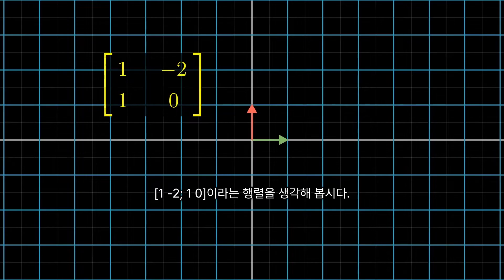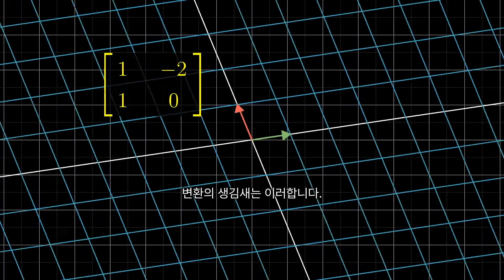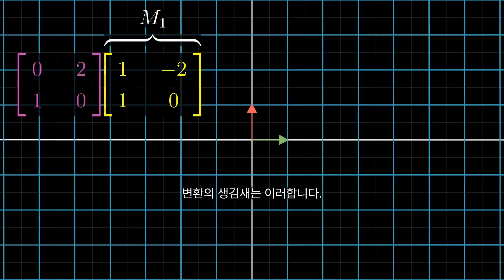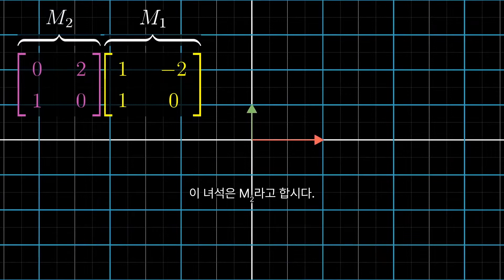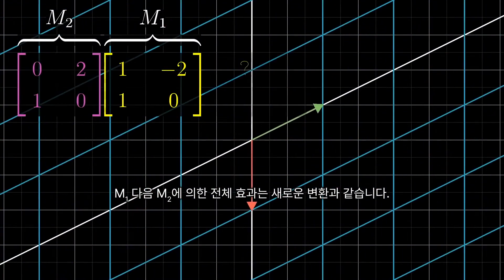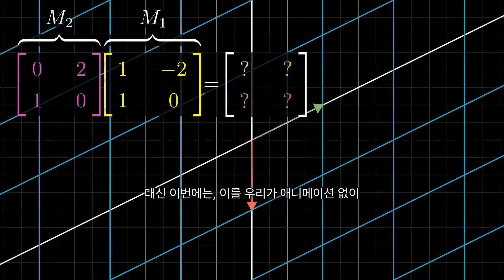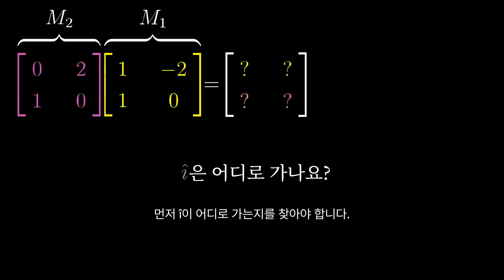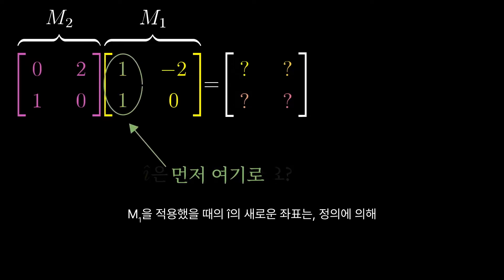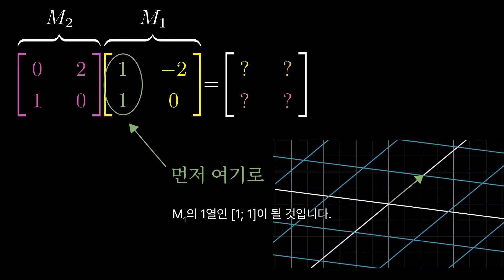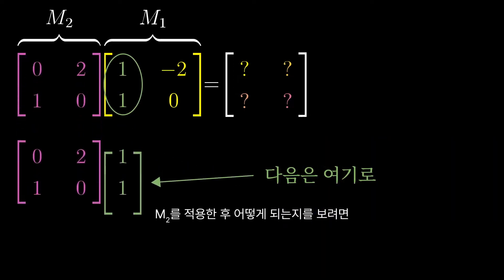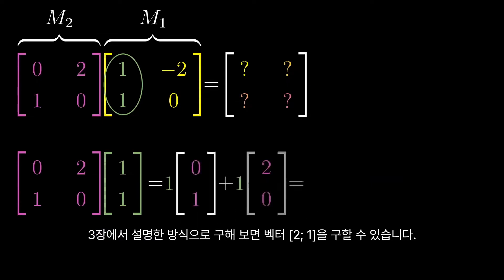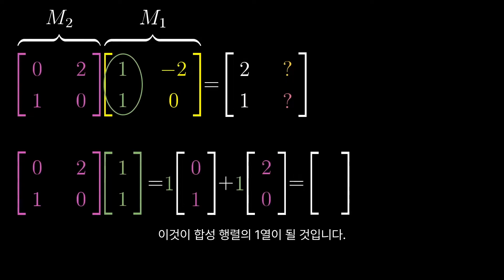Let's look at another example. Take the matrix with columns M1, whose transformation looks like this. Next, take the matrix with columns M2, whose transformation looks like this. The total effect of applying M1 then M2 gives us a new transformation, so let's find its matrix — but this time let's see if we can do it without watching the animations, using just the numerical entries in each matrix. First, we need to figure out where i-hat goes. After applying M1, the new coordinates of i-hat, by definition, are given by the first column of M1. To see what happens after applying M2, multiply the matrix for M2 by that vector. Working it out, you'll get a vector that will be the first column of the composition matrix.